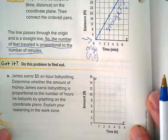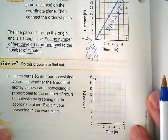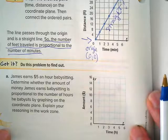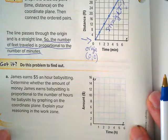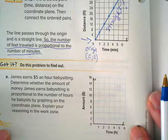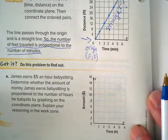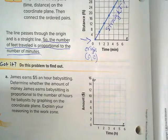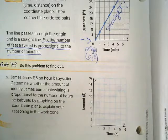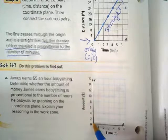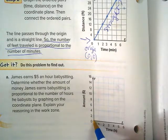Let's try that with this got it down here. James earns $5 an hour babysitting. Determine whether the amount of money James earns babysitting is proportional to the number of hours he babysits by graphing on the coordinate plane. Well, we don't have to make a table. If he babysits zero hours, how much money does he make?